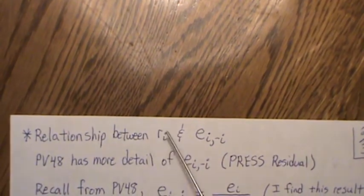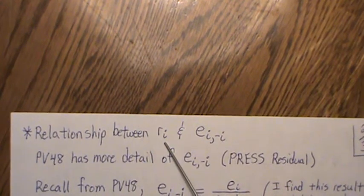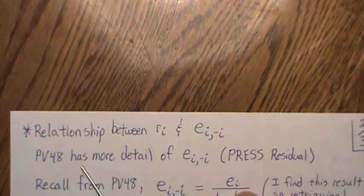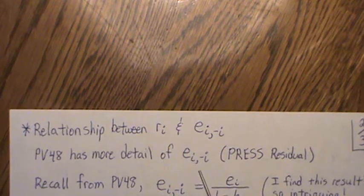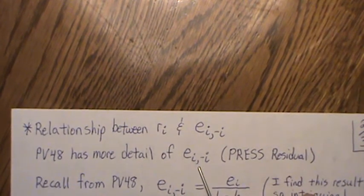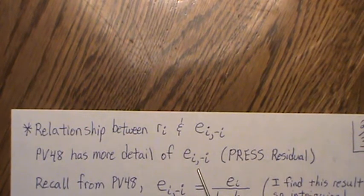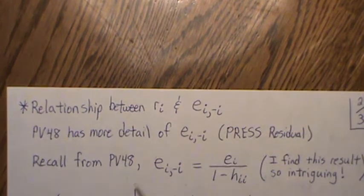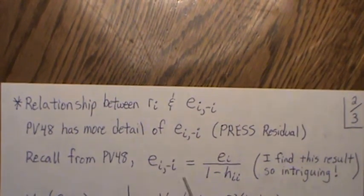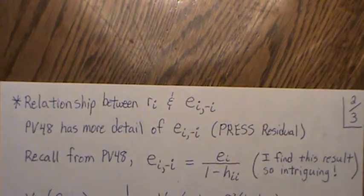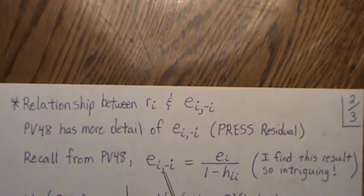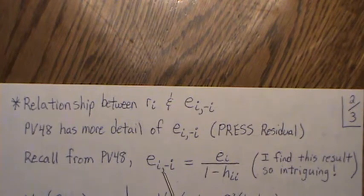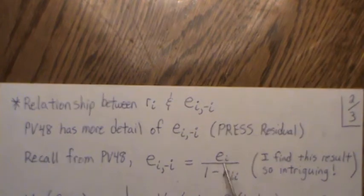Now, the relationship between the internalized studentized residual and the PRESS statistic. From previous video 48, the PRESS residual looks at fitting the model without the ith observation, then predicting the ith observation — a leave-one-out prediction, which stands for Predicted Error Sum of Squares. Remarkably, rather than refitting the model n times, we only need to fit the model once and compute each PRESS residual using the formula e_i / (1 - h_ii).